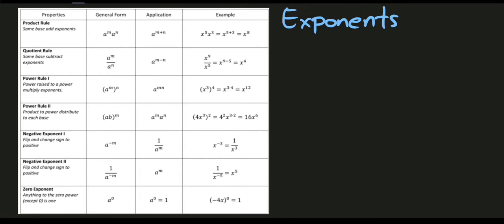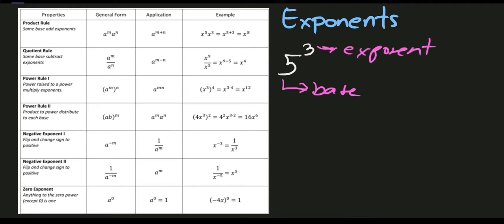For example, let's say we have the expression 5 raised to 3. This value, 5, will serve as the base, and this small number, which is 3, will serve as our exponent. So 5 cubed means we need to multiply 5 three times: 5 times 5 times 5. Simplifying, 5 times 5 is 25, times another 5, which equals 125.